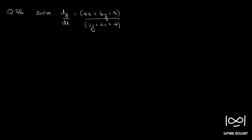Question 88. dy/dx is equal to (4x + 6y + 5) / (3y + 2x + 4). It is in the form dy/dx equal to a function of ax plus by.